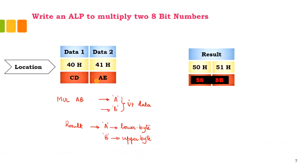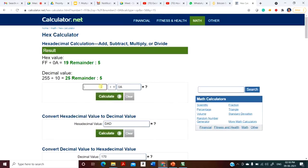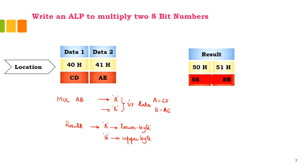You can interchange the register assignments because we are performing multiplication, not division — so any content can be in the A or B register. In this example, the A register contains CD and the B register contains AE. CD multiplied by AE gives the result 8B56, where 8B is the upper byte and 56 is the lower byte. The input data is in locations 40H and 41H, and the result will be stored in 50H and 51H.